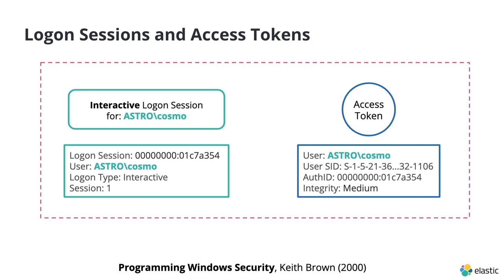There are two really key points about the relationship between logon sessions and access tokens. Firstly, access tokens are always linked to an originating logon session, visible via the auth ID parameter. A logon session can have hundreds of thousands of access tokens associated with it, but access tokens can only ever be associated with one originating logon session. Secondly, access tokens act as a proxy or extension of the logon session — as a developer, you only ever interact with access tokens. As a result, access tokens act as a volatile repository for the security settings associated with that logon session, determining the security context of the user: group memberships, privileges, etc.